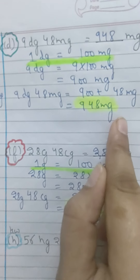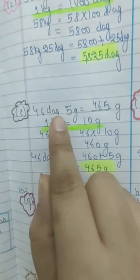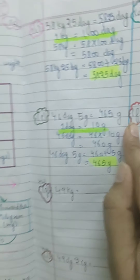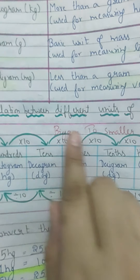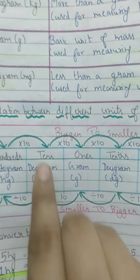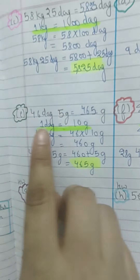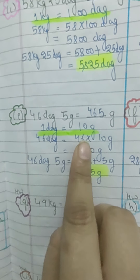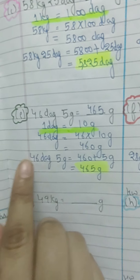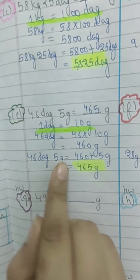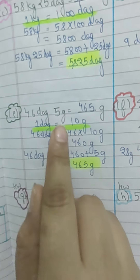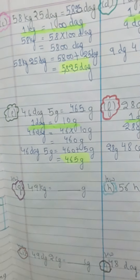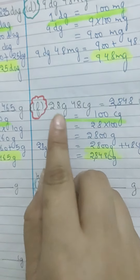Next: 46 decagram 5 gram — convert to gram. From decagram to gram is one jump, so multiply by 10. 1 decagram equals 10 grams. So 46 decagram = 46 × 10 = 460 grams. Then 460 + 5 = 465 gram.